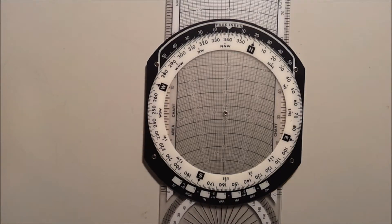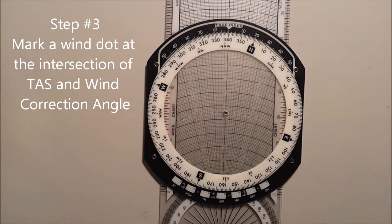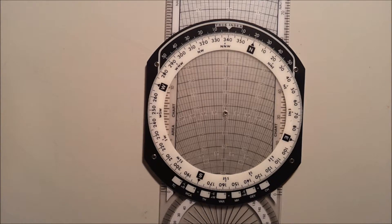Now mark your wind dot where your true airspeed and your wind correction angle intersect. For our exercise we will use 110 knots and 10 degrees right wind correction.